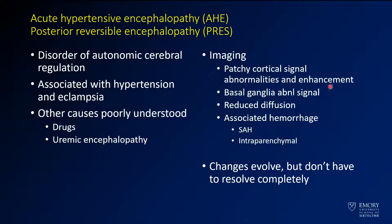The imaging appearance you're going to see is very much like in this case: patchy cortical signal abnormalities, subcortical white matter edema, the basal ganglia can be abnormal, and there can be associated reduced diffusion. It's relatively common to see hemorrhage with these — if you look in the books they'll say it's relatively rare, but you see it considerably more than you might think. These changes evolve over time.